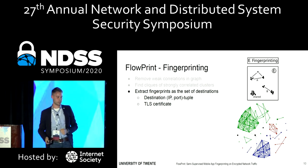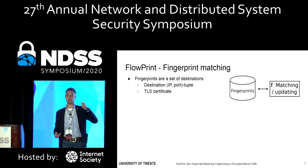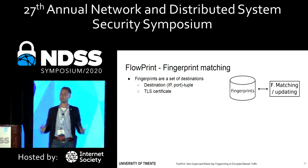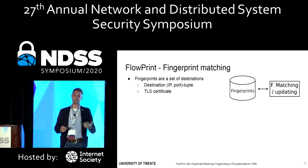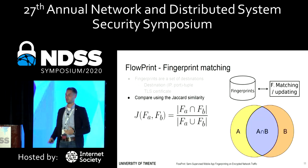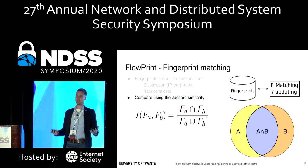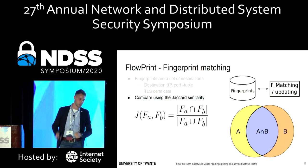Once we have these fingerprints, we want to compare them, because we want to use them to later detect applications we've seen before, or maybe even detect applications we haven't seen before in the network. Since these fingerprints are sets, the natural metric to compare them is the Jaccard similarity, which is basically a distance between two sets. If they are very similar, we get a high score; if they are very distinct, we get a very low score. We can use this score to match fingerprints.